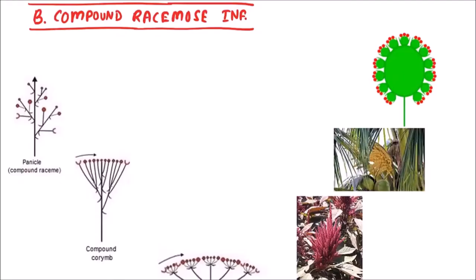Welcome to Studio Biology. In this video, we are going to discuss the compound racemose inflorescence. These are of various types, like panicle or compound raceme, also known as raceme of racemes. The examples include Delonix, Cassia fistula, and Asphodelus.